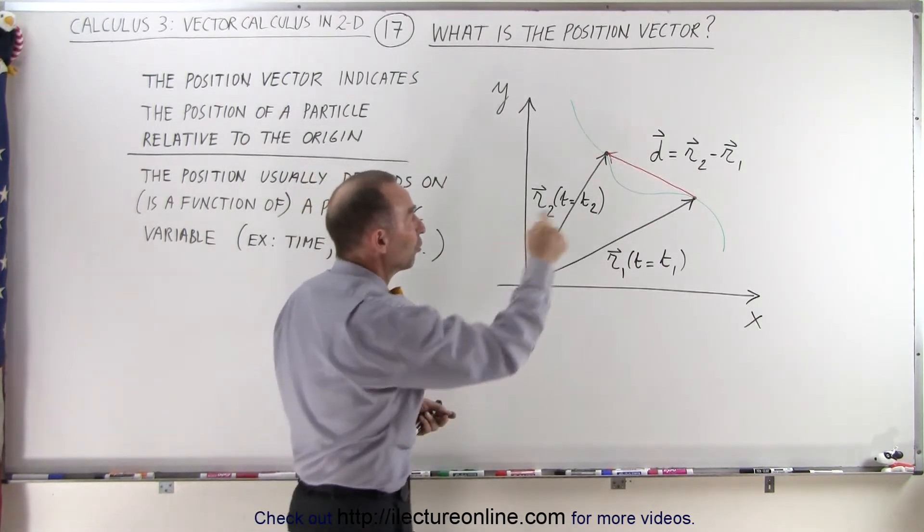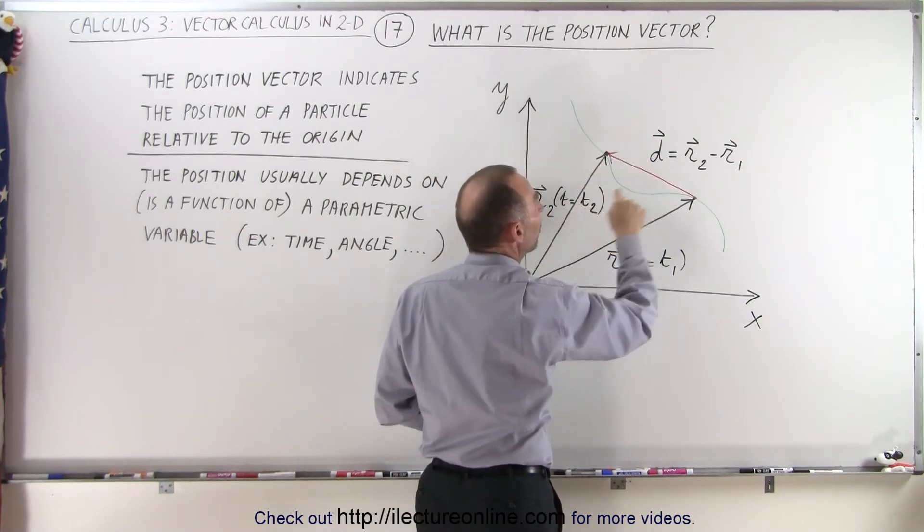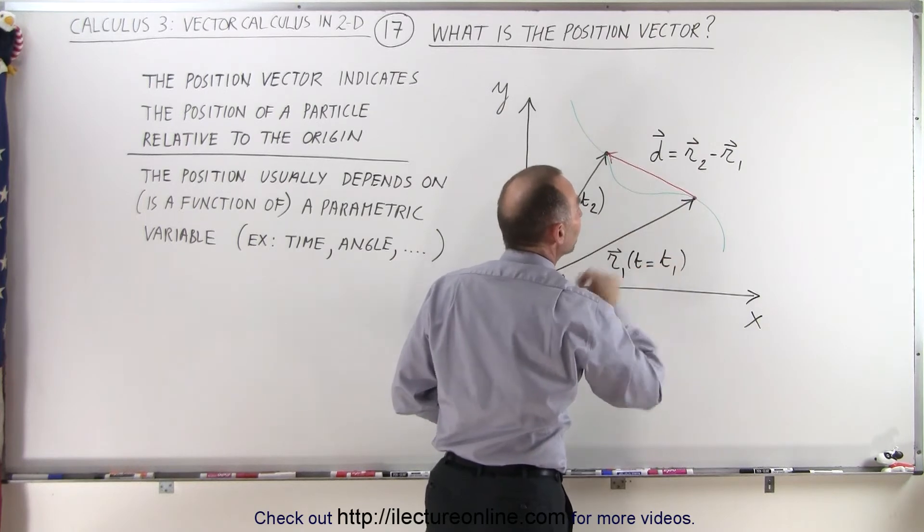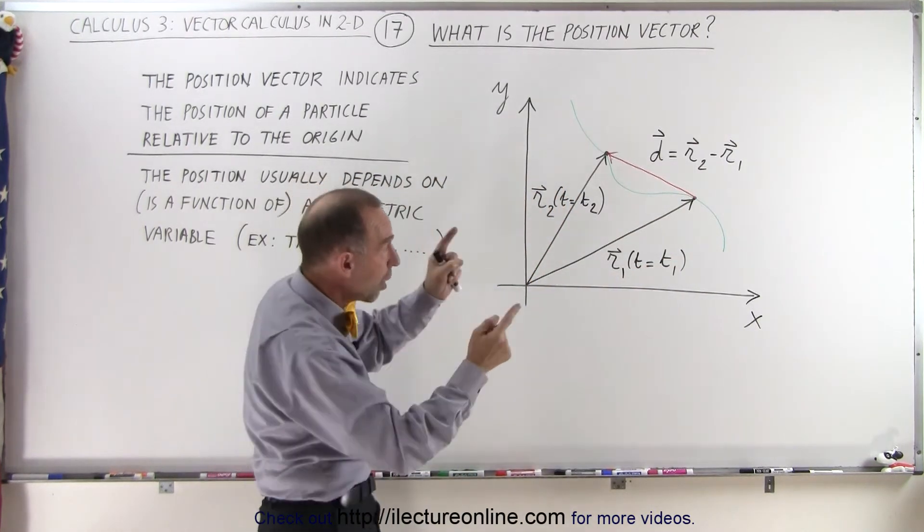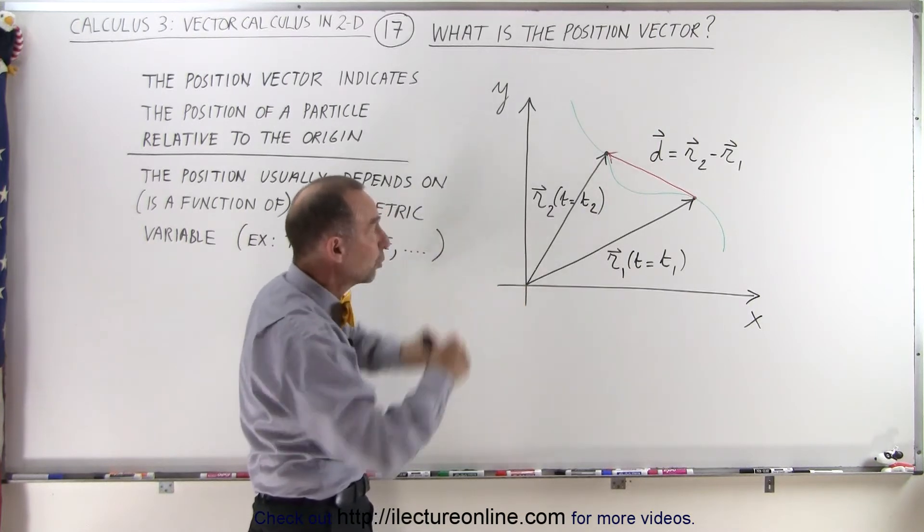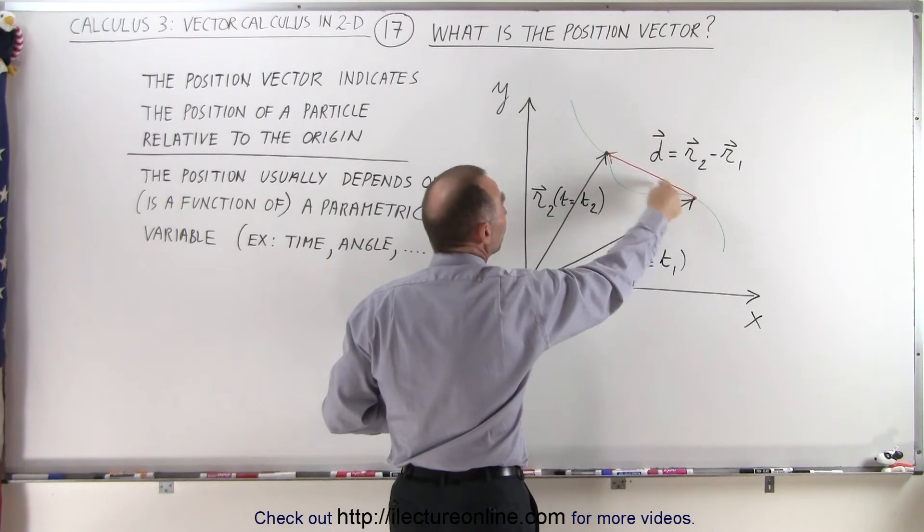And so we write the displacement as being r2, where it's going to be at time 2, minus r1, where it came from at time equals t1. And as we learned before, that's how we can draw the vector representing the difference between those two position vectors that, in this case, represents the displacement.